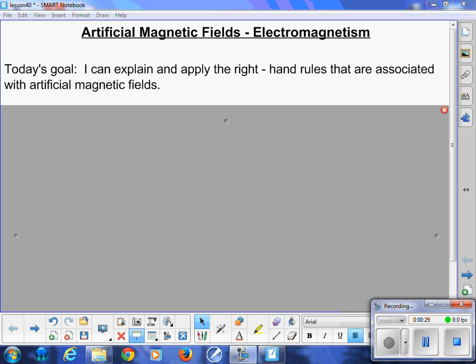Today's goal: I can explain and apply the right-hand rules that are associated with artificial magnetic fields. Similar to grade 11, I'm just doing all three rules in one lesson here. For those that remember the right-hand rules, you're all set. For those that don't know what it is or haven't heard of it, you can follow along.